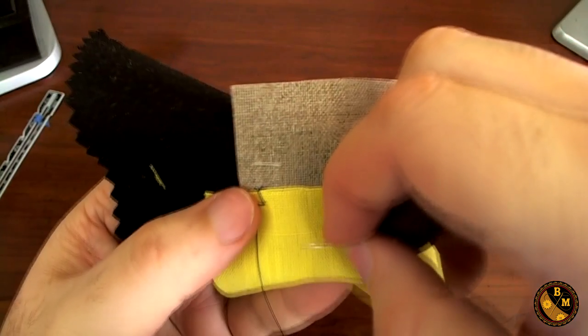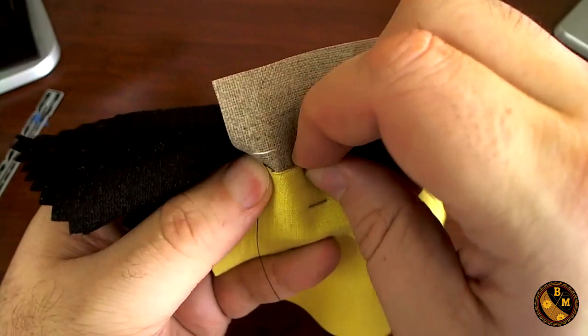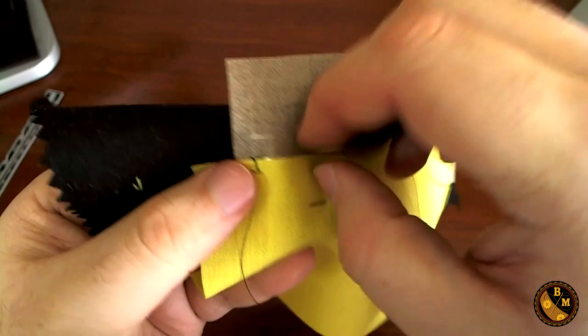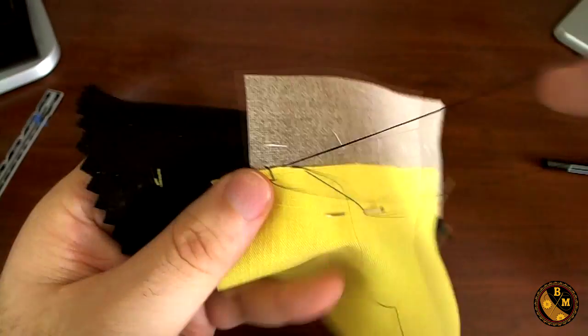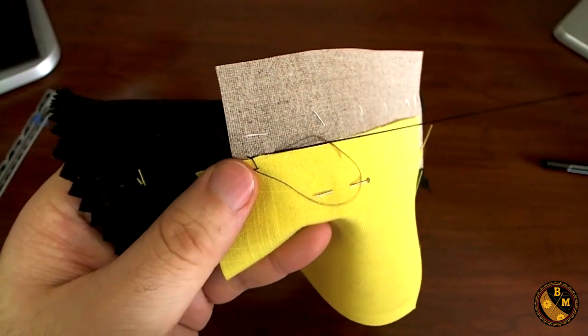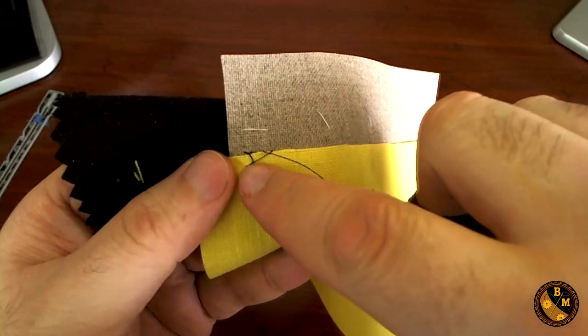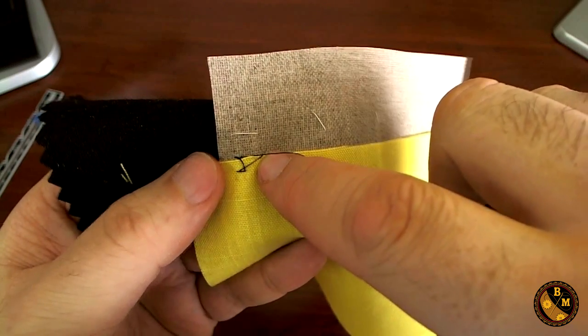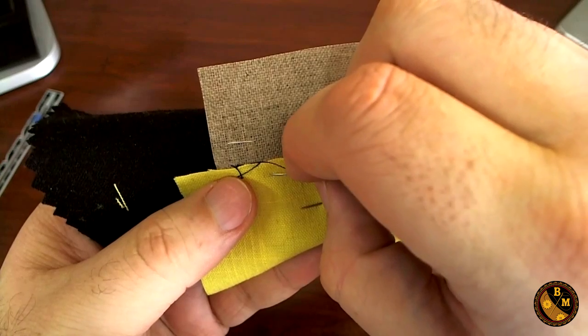The next part of the stitch, I'm going to move forward about 3 eighths of an inch, as near to the edge of the pocketing material as possible. Pull through. And as you can see, we now have a very large piece of diagonal thread that's showing here. This is why you don't want to see this stitch on the outside.